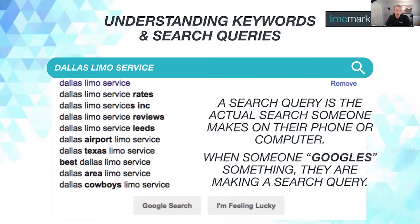Just going over this again — a search query is when someone makes an actual search on their phone or computer. It's when someone Googles something. I really want to hammer this home because there's so much confusion around that. Someone makes a search, a keyword gets triggered, and an ad is shown.